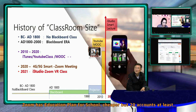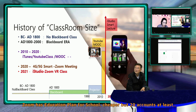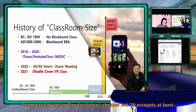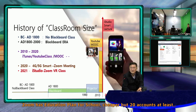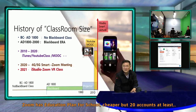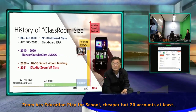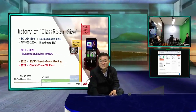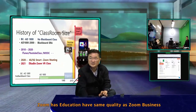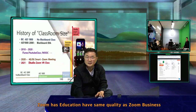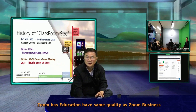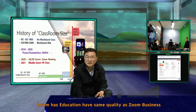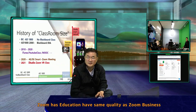We also have a plan called Education. Let me show you. This one is cheaper but it's at a minimum of 20 licenses. It also supports 1080p, same as the Business plan.